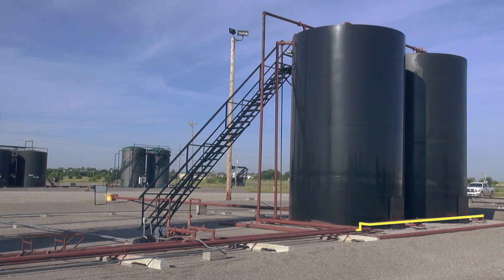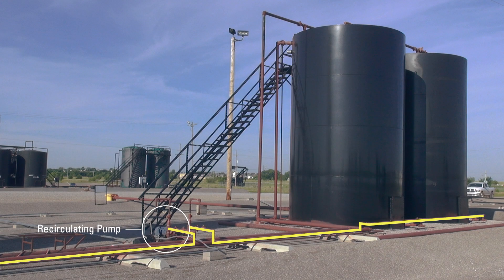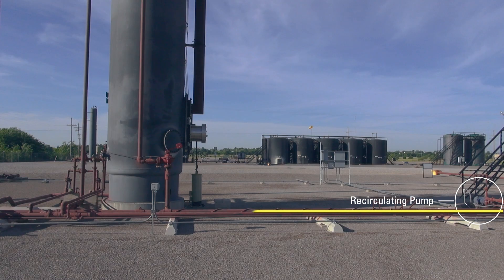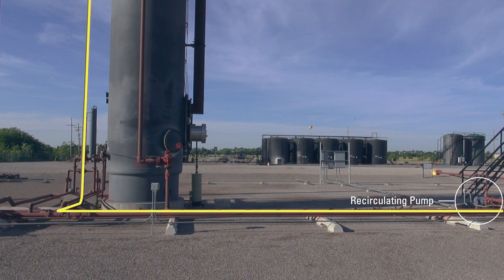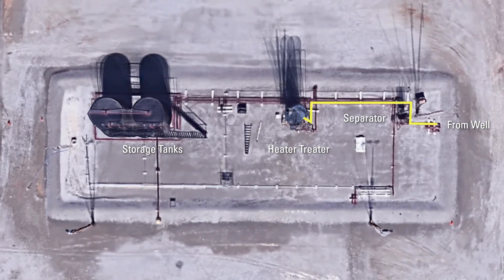This is a recirculating line that goes into the recirculating pump, and from here it goes back to the inlet of the treater and runs through the whole treater again. There's also a line that can bypass the separator, a line that can bypass the treater, and a line that can bypass both of them — it's all done with the valving.